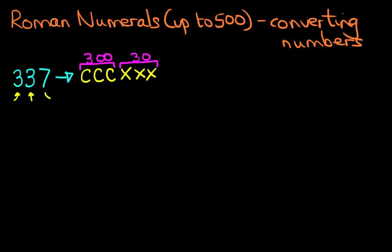And lastly, we do the units, which is 7. What is 7 in Roman numerals? That's simple, it is V, I, I. So that is 7, 5, 6, 7.